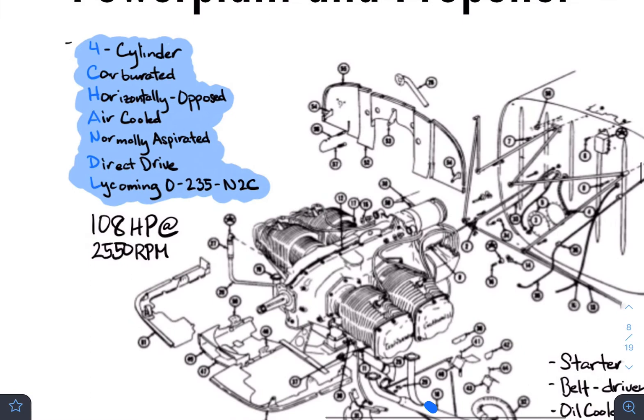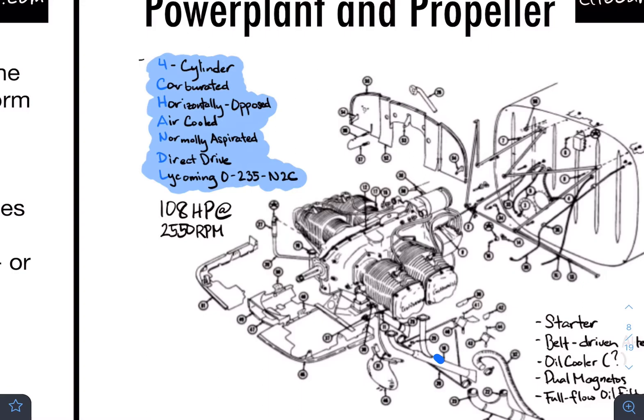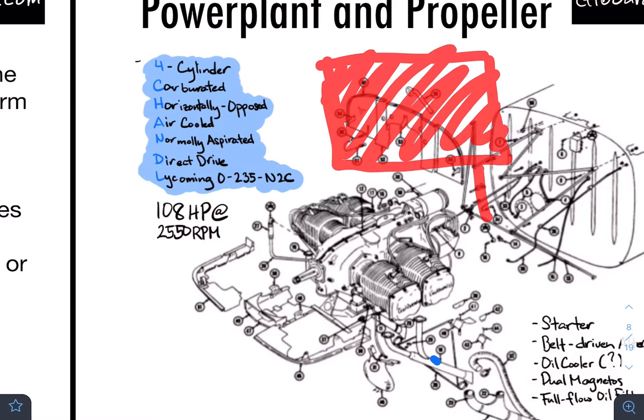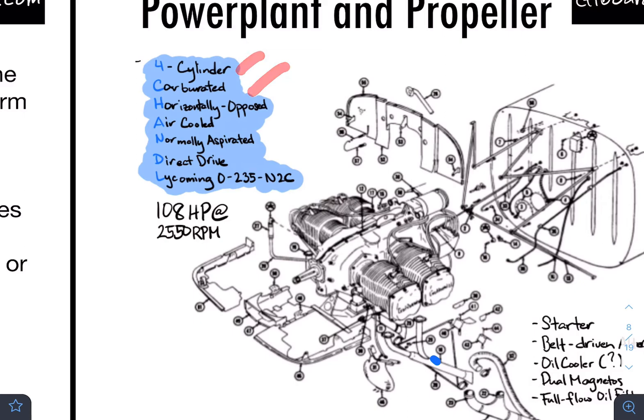First, four cylinders. These are the cylinders where you get the ignition and the explosion. It is also carbureted — this carburetor is what allows you to move the fuel from the fuel tank, through the carburetor, and into the cylinders. So: four cylinders, uses a carburetor.